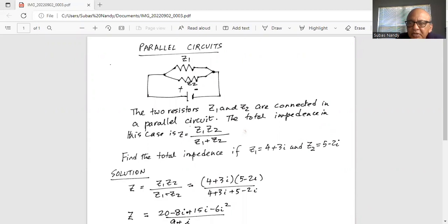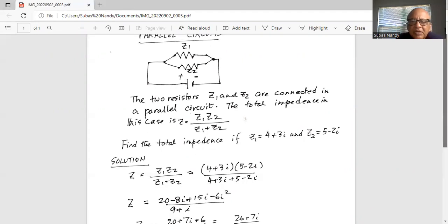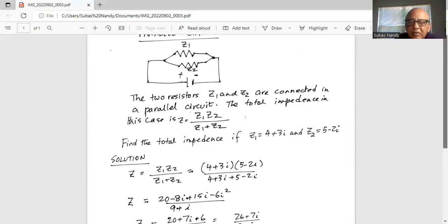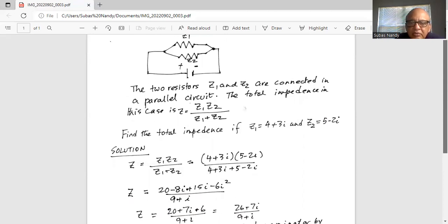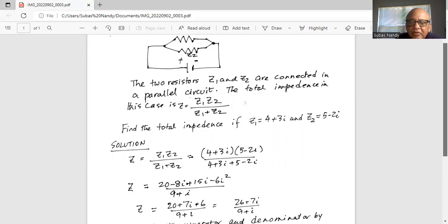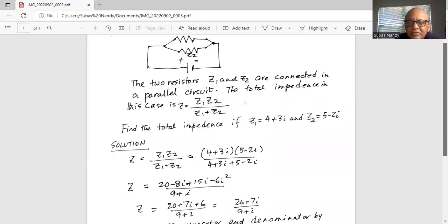So the total impedance Z is given by Z1 multiplied by Z2 divided by Z1 plus Z2. So it is 4 plus 3i times 5 minus 2i divided by 4 plus 3i plus 5 minus 2i.